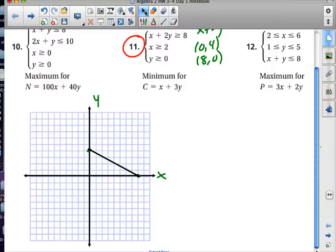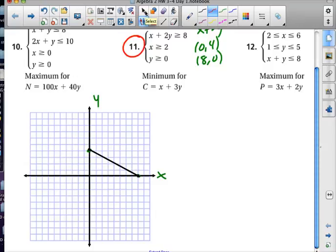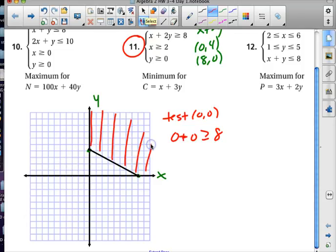The next piece is to shade. It says x + 2y is supposed to be greater than or equal to 8. So if I test the point (0,0) in there, it says 0 + 0 is greater than or equal to 8. Well, 0 is not greater than or equal to 8, so I need to shade above.